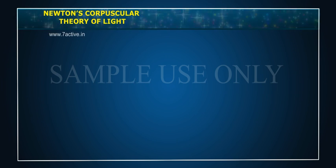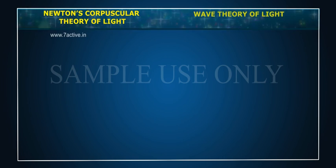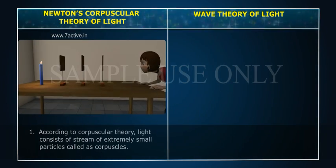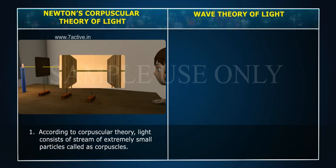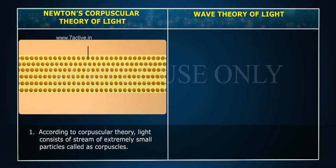Newton's Corpuscular Theory of Light, Wave Theory of Light. Point 1: According to Corpuscular Theory, light consists of a stream of extremely small particles called corpuscles.